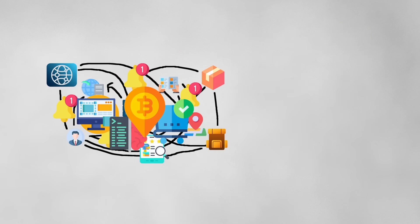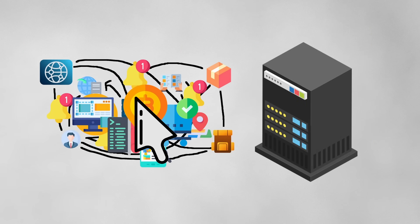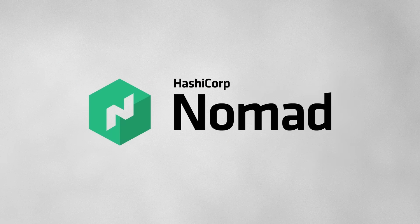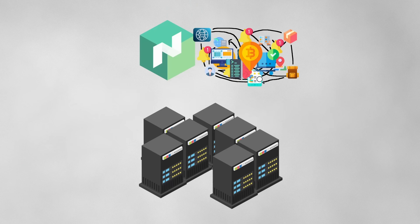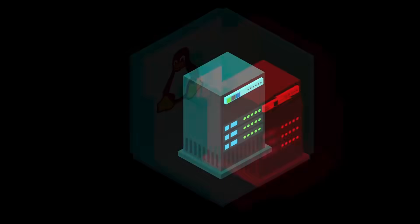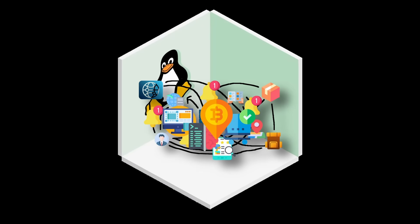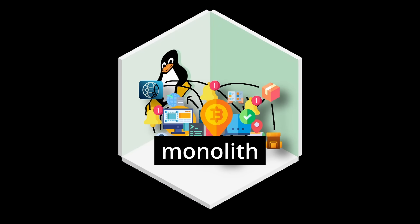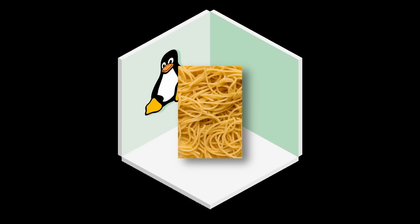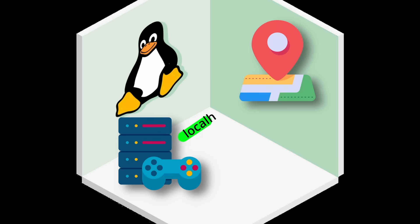So what do you run all this stuff on? Servers. How do we get this stuff onto the servers, though? That's what Nomad handles — it's an orchestration tool that automatically deploys your application onto your servers. We could hypothetically put everything into one server called a monolith, or even a single process called spaghetti code, where everything can just talk to each other through static ports or function calls.